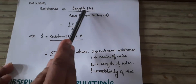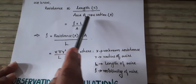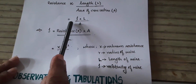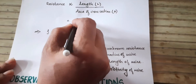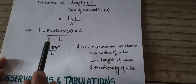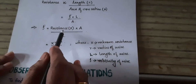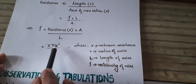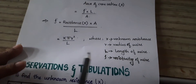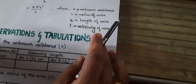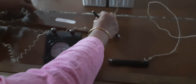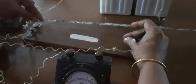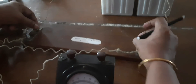We know that resistance is proportional to the length of the wire and inversely proportional to the area of cross section. Introducing the constant of proportionality rho: R = rho × L / A. Rearranging, resistivity rho = X × A / L = X × (π r²) / L. Make it a point to measure the length L of the unknown resistance wire — from one terminal to the other — by releasing the wire and keeping it over a scale.